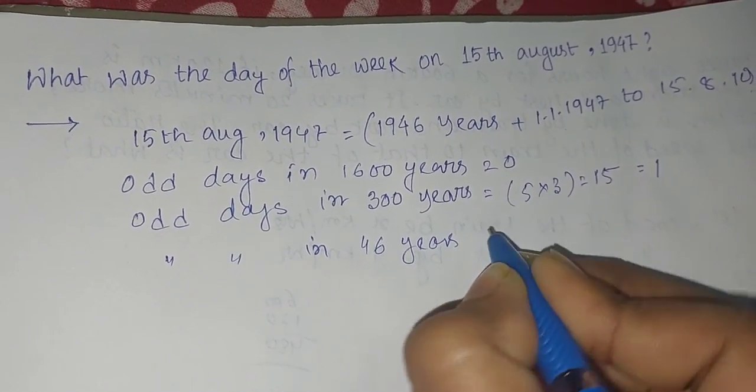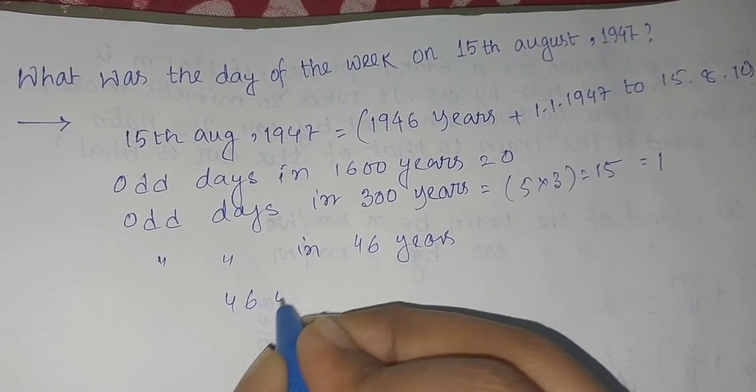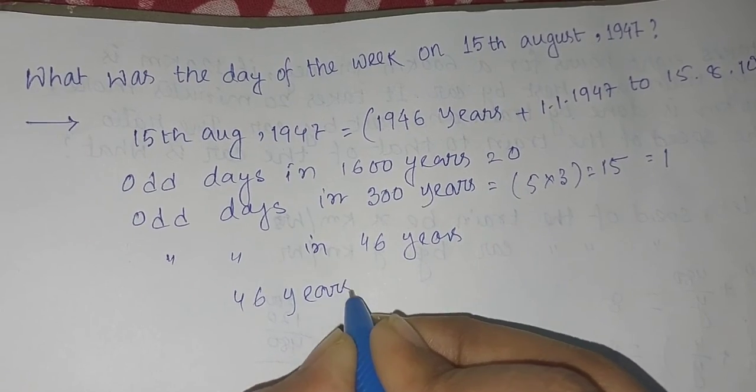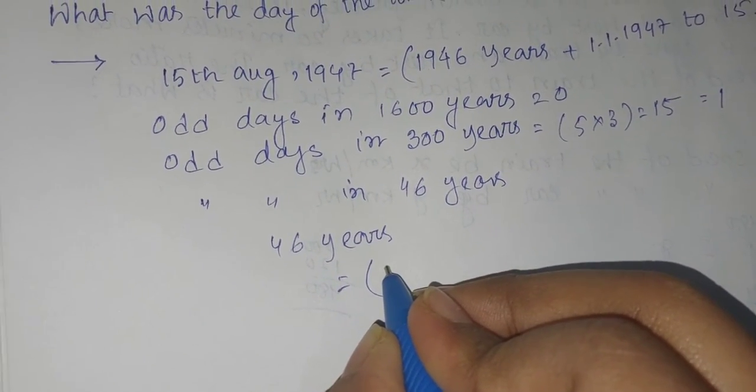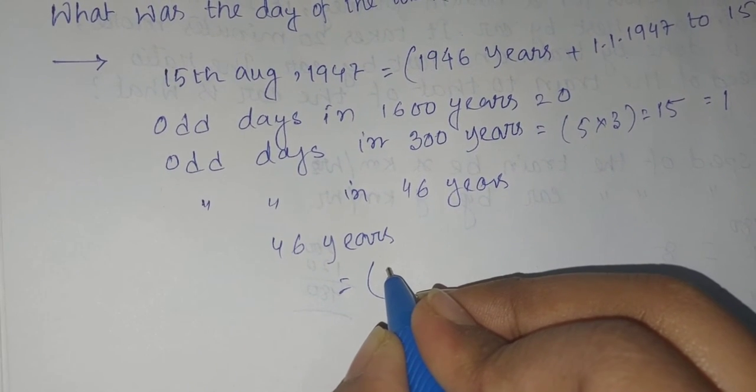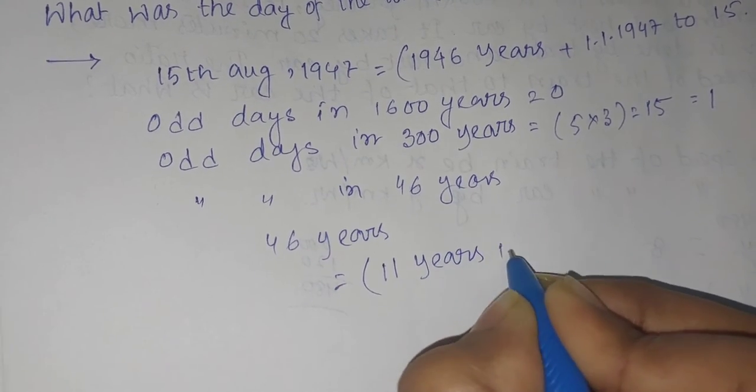If I try to find out, you know 46 years means how many leap years are there? Leap years means four years back to back, right? So that will be 11 years that are leap years.